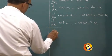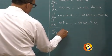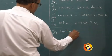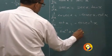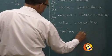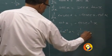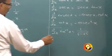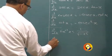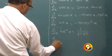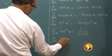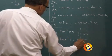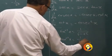d by dx of sin inverse x is 1 upon root of 1 minus x square. d by dx of tan inverse x is 1 upon 1 plus x square.